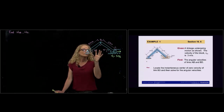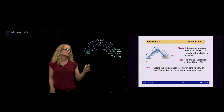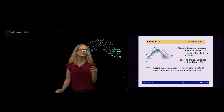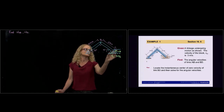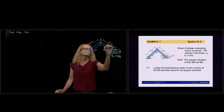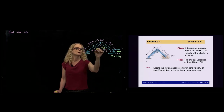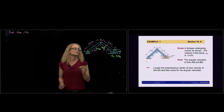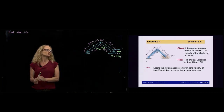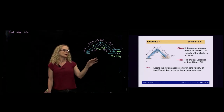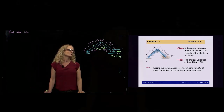For that instance, we are asked to find the angular velocities. The velocity of BC is in this direction and the velocity of AB is in this direction. We want to find those two angular velocities by knowing the velocity of C.